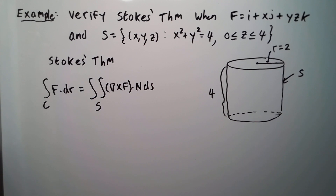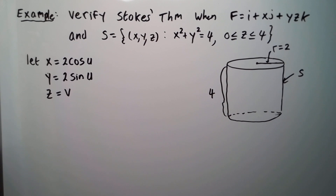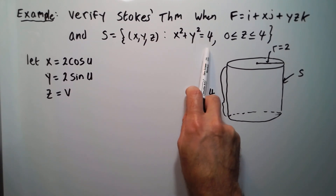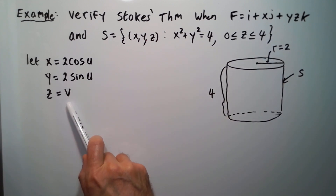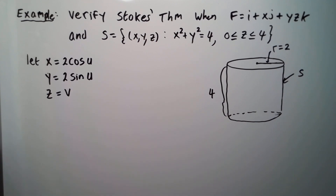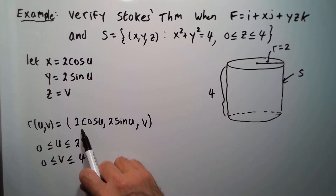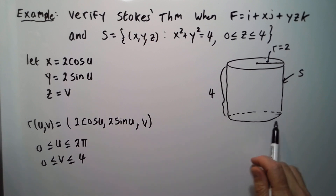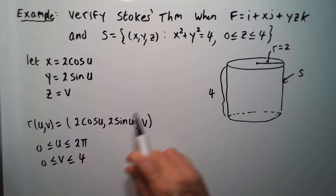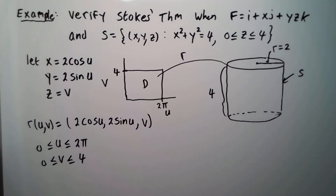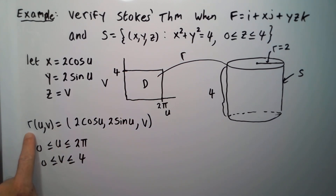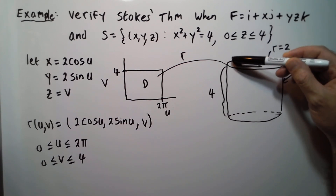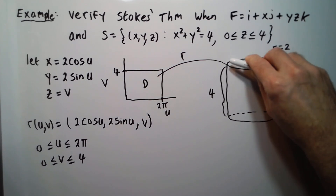Now let's parametrize the surface s. Since x and y are on the circle of radius 2, x is going to be 2 cosine u, y would be 2 sine u, and z gets the range between 0 and 4, so we'll call it v. So our mapping r(u,v) would be (2 cosine u, 2 sine u, v). U goes from 0 to 2π since we go around the whole circle, and v is the same as z, going from 0 to 4. The domain region d is the rectangle 0 to 2π on u and 0 to 4 on v, which maps into our cylinder — just the surface of the cylinder, not the inside.